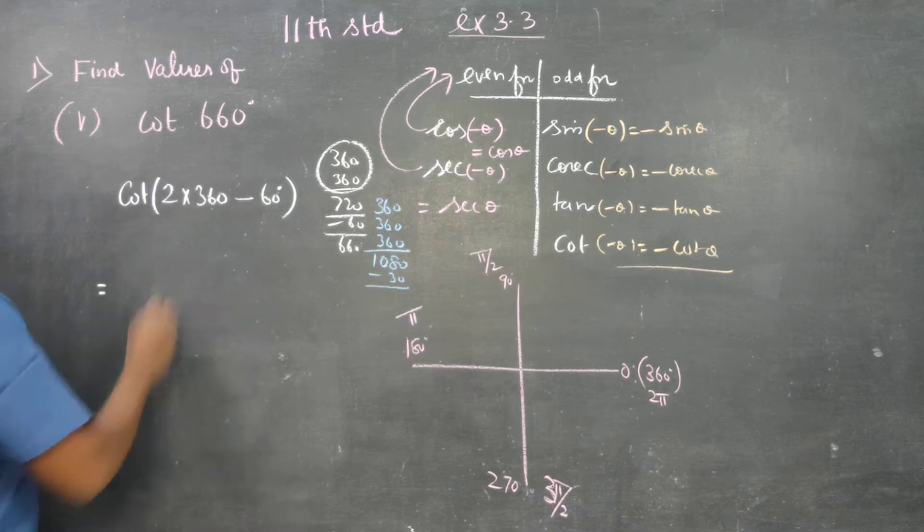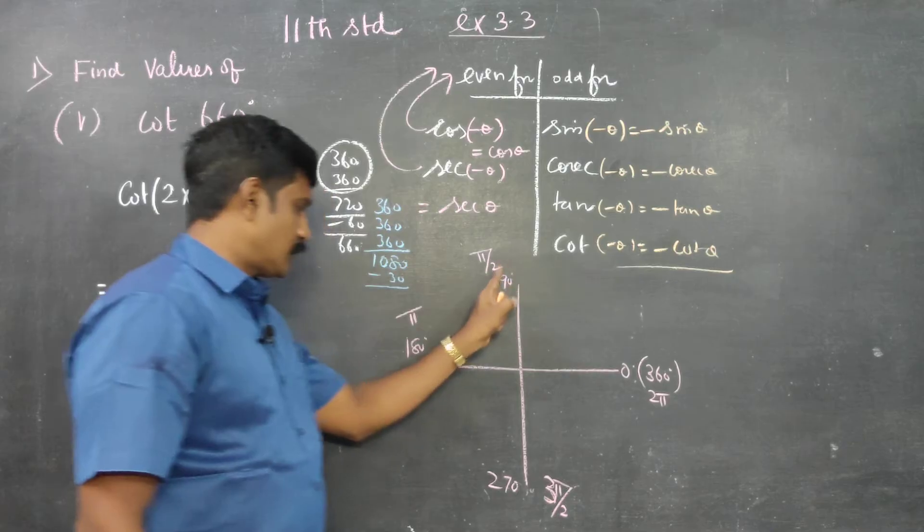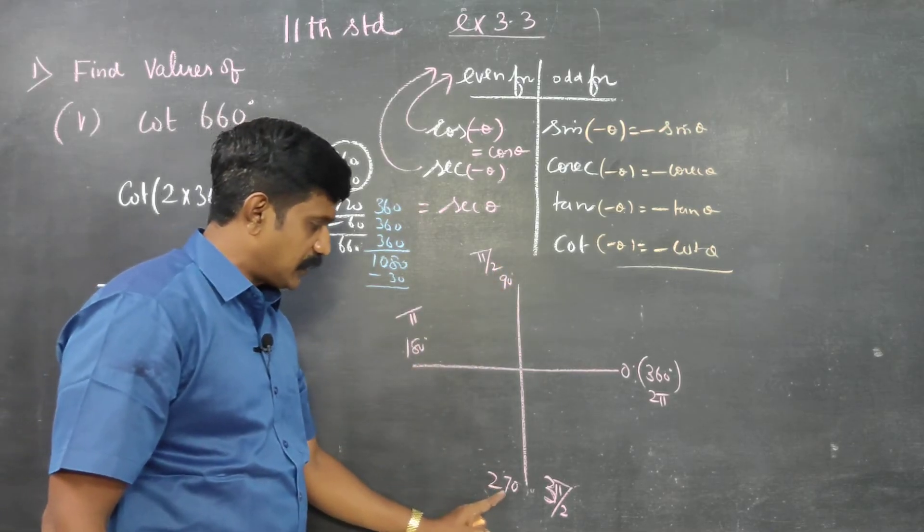360 degrees is the full rotation. We start with 0, 90, 180, 270, and 360.